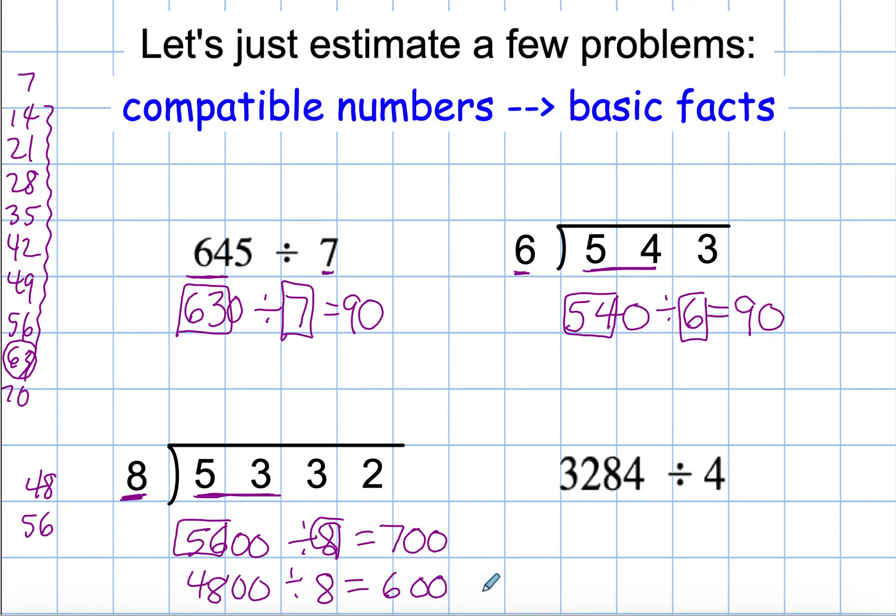My final example, I'm thinking multiples of 4 near 32, and it works out exactly this time. Again, so 3,200 divided by 4, 32 divided by 4 is 8, and then I have my two 0s, so it is 800.